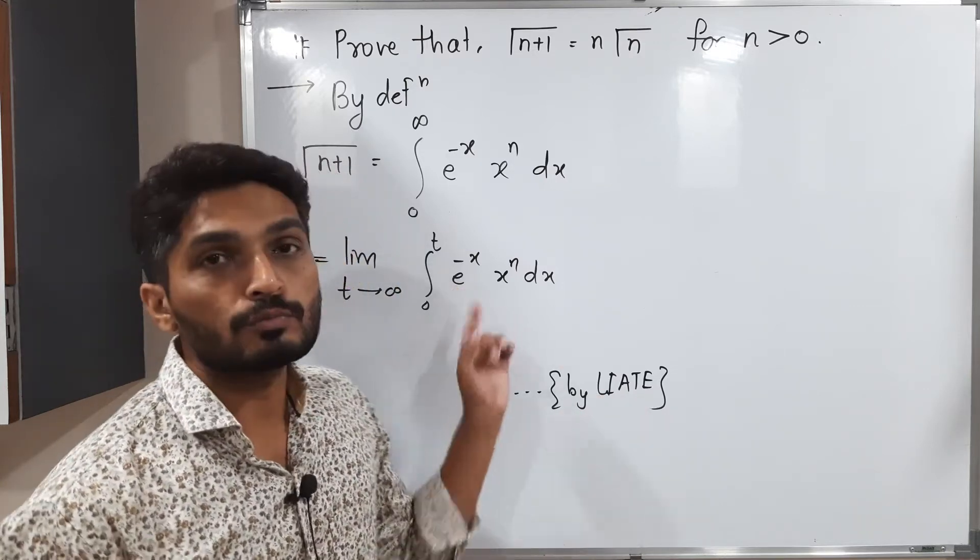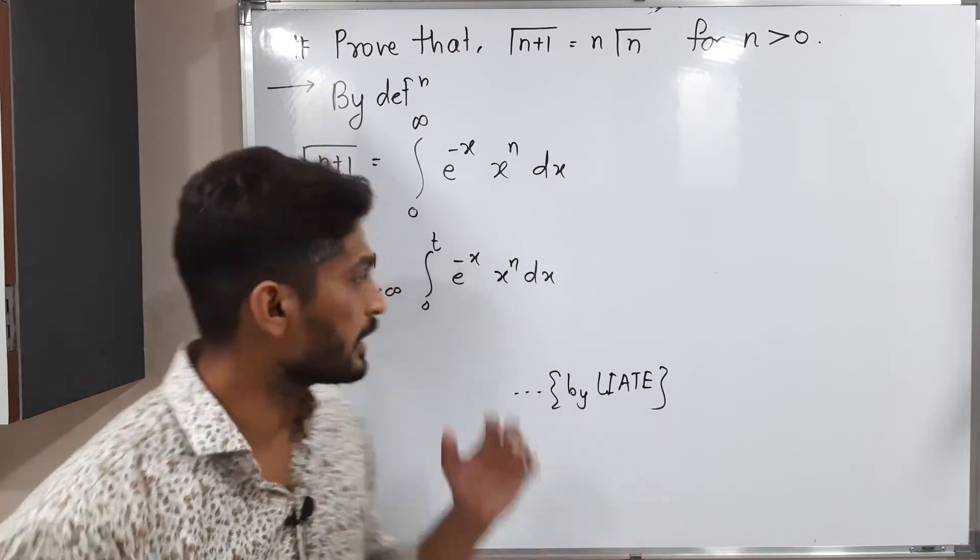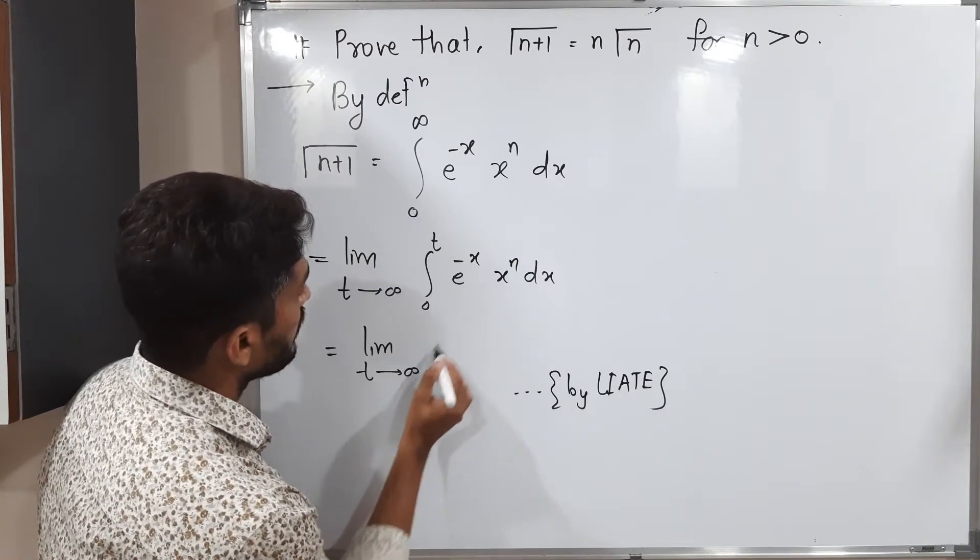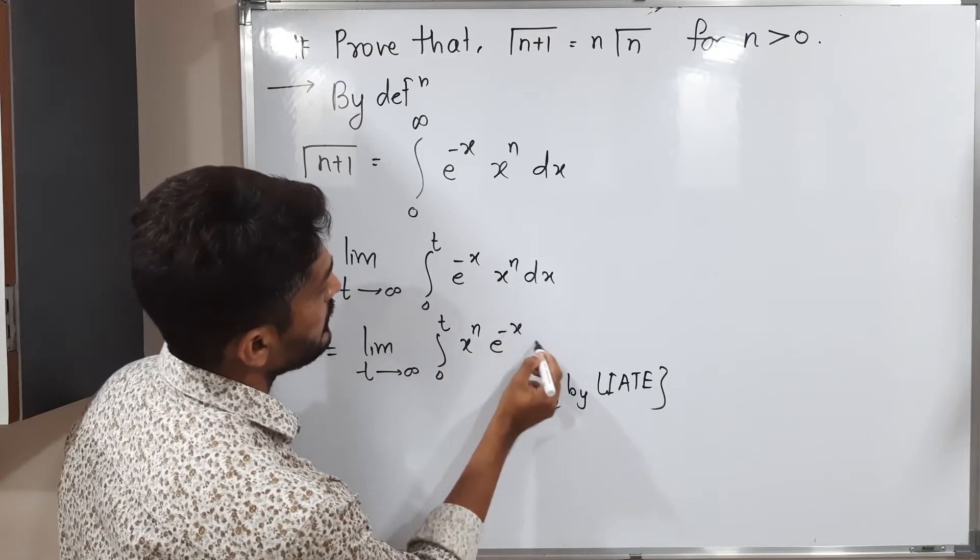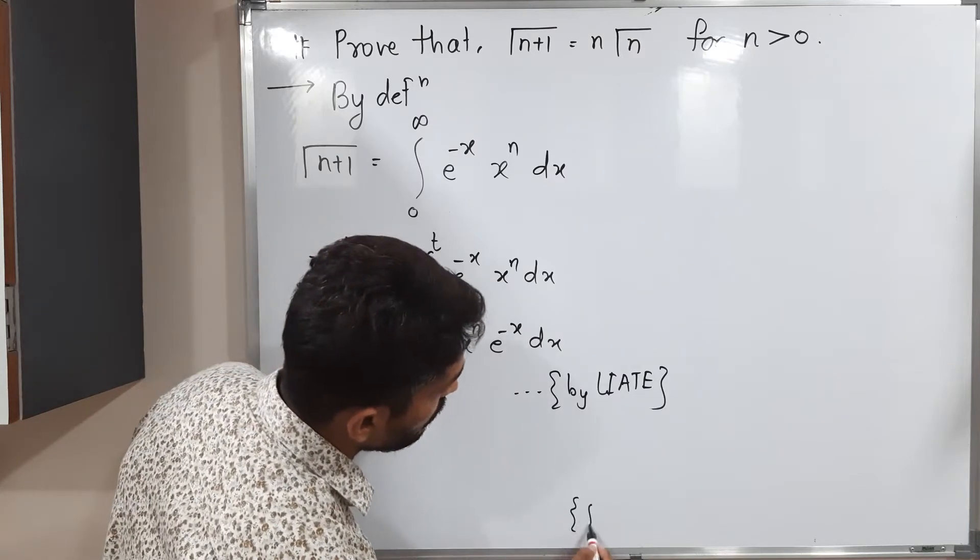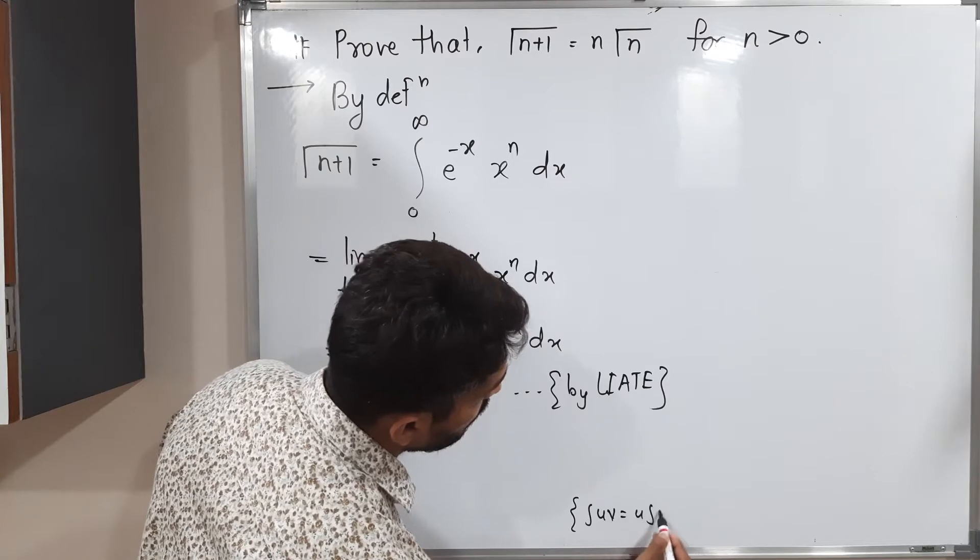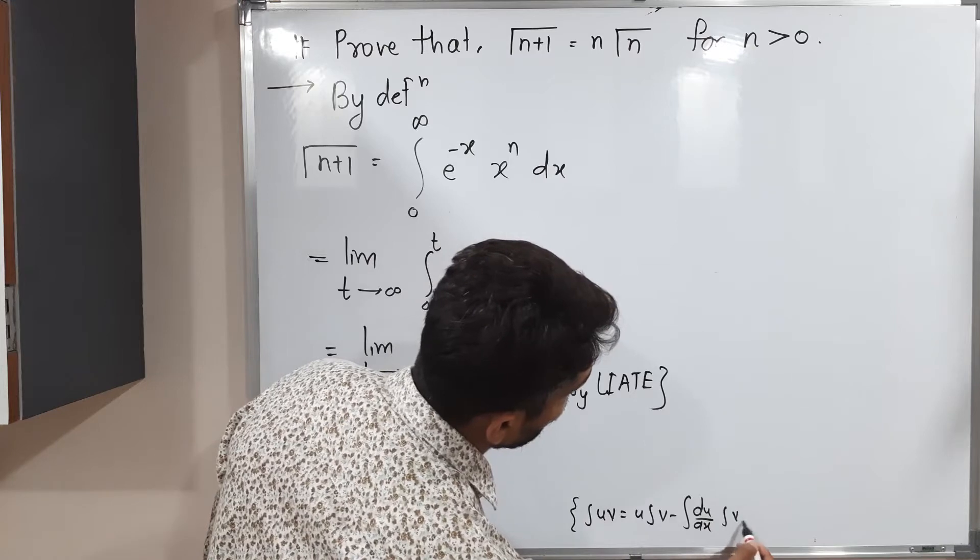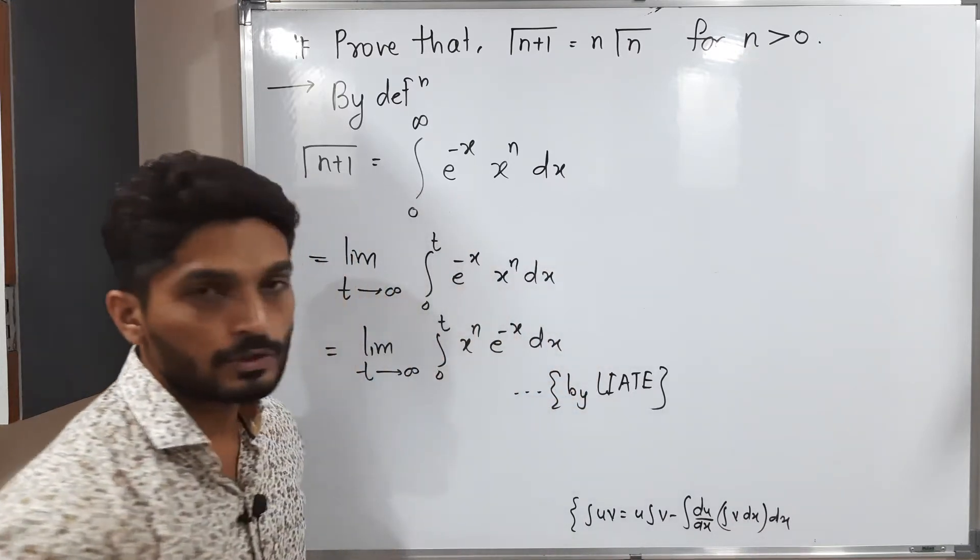So this one e raised to minus x is an exponential function, so it should be the last function, the second function. So that's why I will interchange. Limit t tends to infinity, integration 0 to t, x raised to n, e raised to minus x dx. So I am going to use the u v formula for integration. I hope you know this formula: integration u v equals u integration v minus integration derivative of u integration of v. So this is the formula.